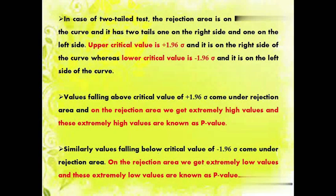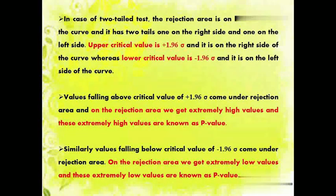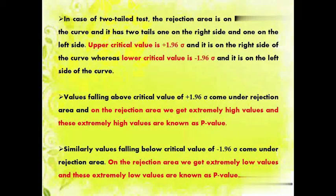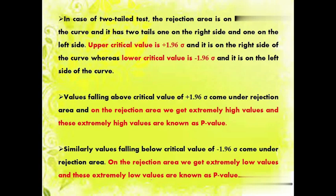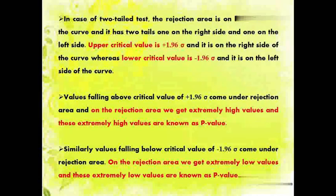The upper critical value is plus 1.96 sigma and it is on the right side of the curve. The lower critical value is minus 1.96 sigma and it is on the left side of the curve. Values falling above the critical value on the right come into the rejection area, and we get extremely high values there, known as T values. Similarly, values falling below the critical value of minus 1.96 sigma come in the rejection area. For 5% significance in a two-tailed test, the critical value is plus minus 1.96 sigma.